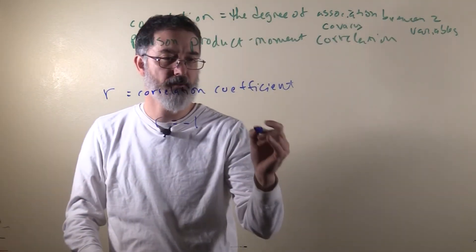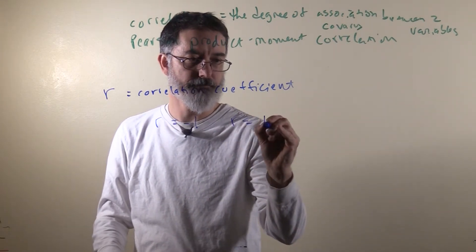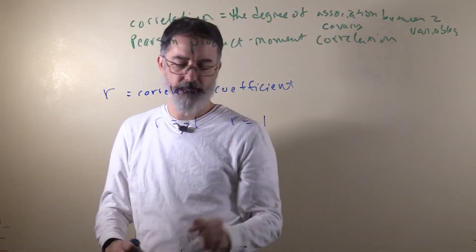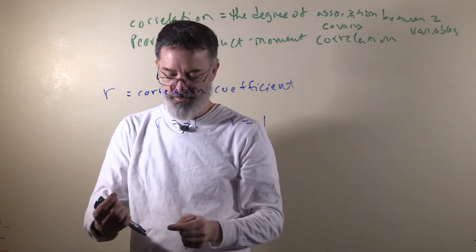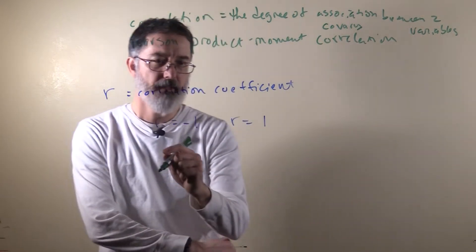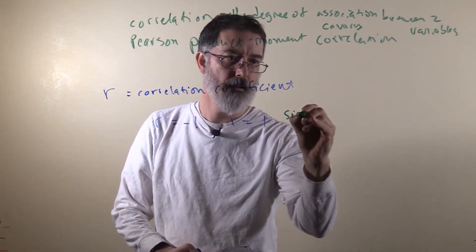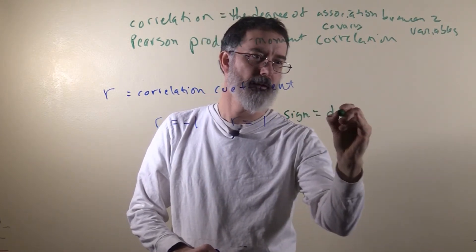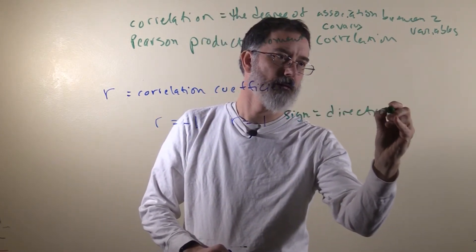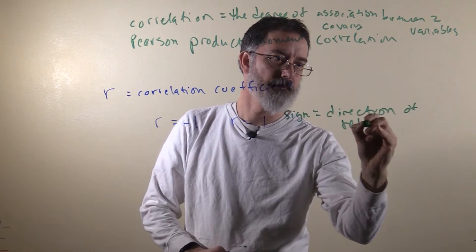Correlation coefficients also have a sign. They are either negative or positive. For positive, you do not put the plus sign there. The sign indicates the direction of the relationship between the two variables.